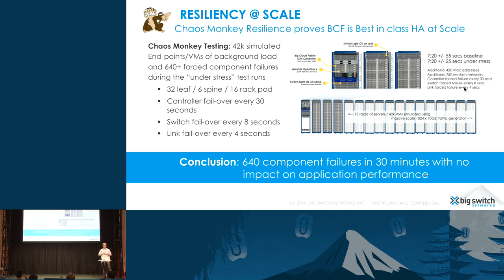It's easy to put up a 300-node test network that runs in a steady state, but as it starts recovering from this scale of link failures and switch failures, that's really where the rubber hits the road.